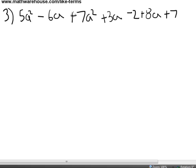5a squared minus 6a plus 7a squared plus 3a minus 2 plus 8a plus 7. Quite a mouthful. So when you have to simplify an expression like this, the first step is to identify like terms.